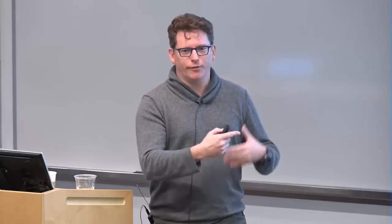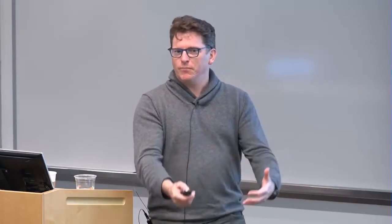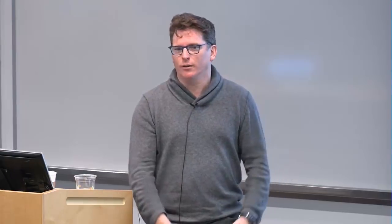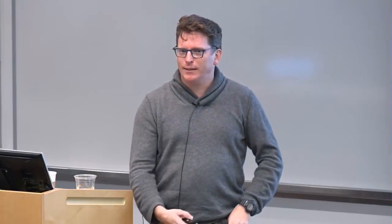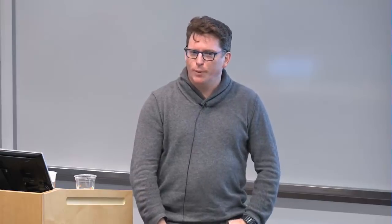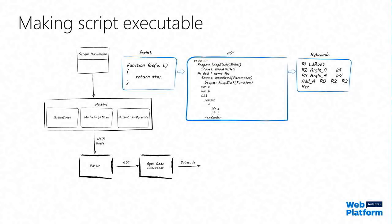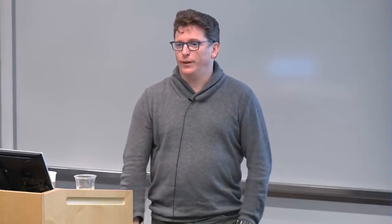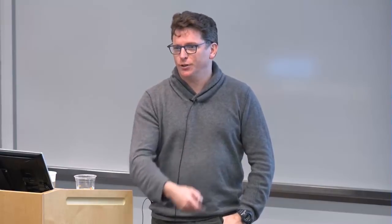That initial scan is supposed to be really fast because we don't want to do the expensive part of building the AST for code that's never going to get called — and there's a lot of code that never gets called. Once a function does get called, we produce an AST, an abstract syntax tree, which is a tree representation of the whole script containing details about scoping, where the functions are, the variables, and the expressions. The AST is then fed to the bytecode generator, which transforms it into a format appropriate for the interpreter — a linear, register-based representation of the instructions in a function.